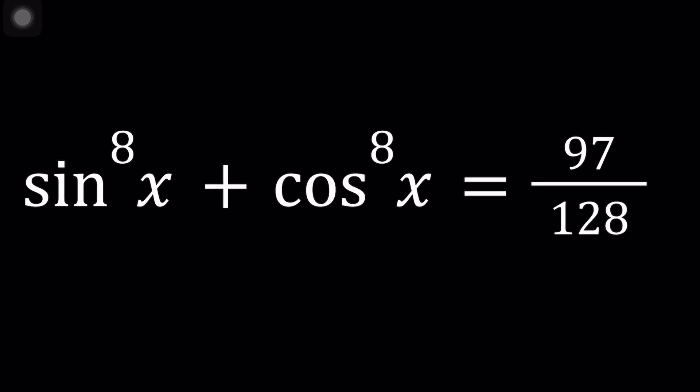Hello everyone. In this video we're going to be solving a trigonometric equation, an octic trigonometric equation because of the eighth power. We have sine x to the eighth power plus cosine x to the eighth power equals 97 over 128 and we're going to be solving for x values.